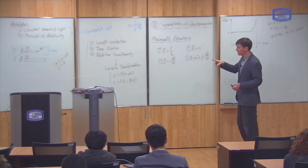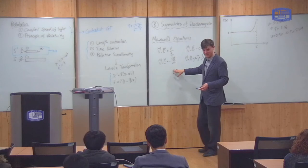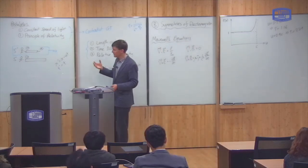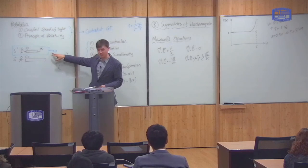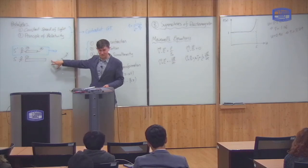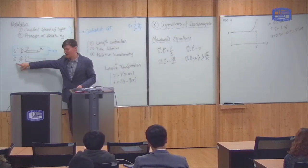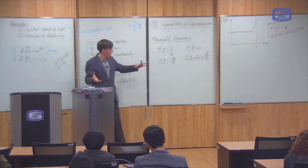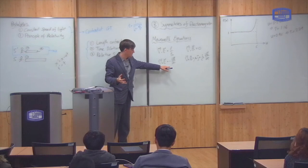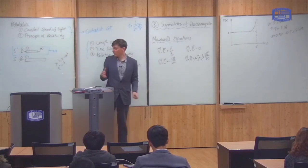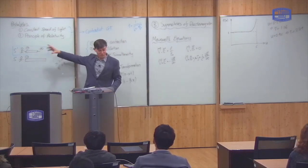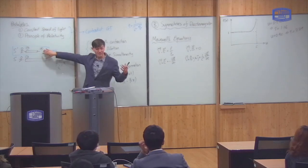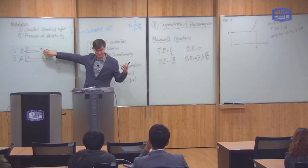Now, what Lorentz was doing was he was looking at these equations, and he was seeing what would happen if you consider these equations from the perspective of two different observers. So, namely, if this observer S measures some electric and magnetic fields and discovers they obey these equations, then what about the other observer S prime? Will the magnetic and electric fields that he measures also obey the same equations? That was the question he was asking.